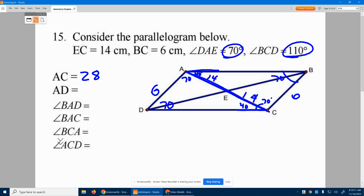AD - well, we already said that guy's 6. Angle BAD - so I need to go from B to A to D. B over to A, down to D. Those guys together, that's 110 degrees.